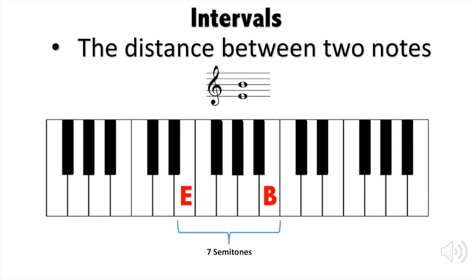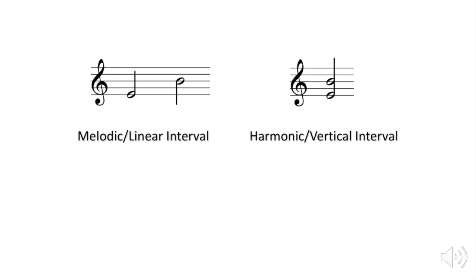Now, if these two notes do not happen at the same time, we call that a melodic interval or linear interval. And if they do happen at the same time, we call them harmonic interval or vertical interval. But we will be mostly dealing with vertical intervals.